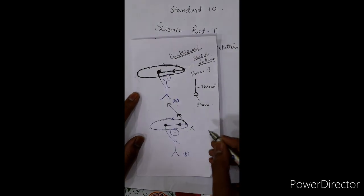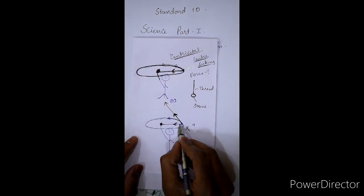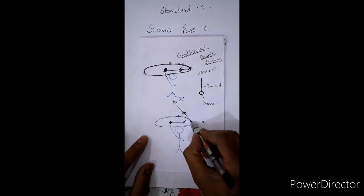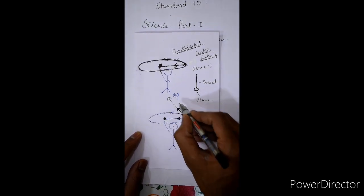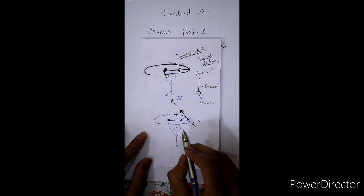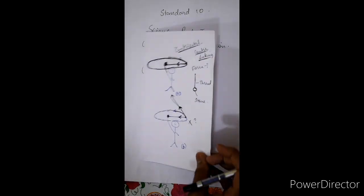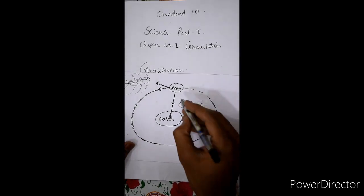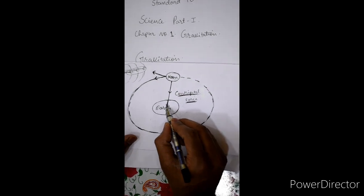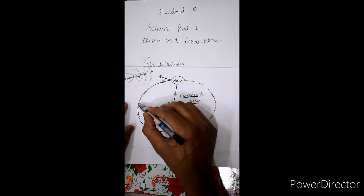If the centripetal force is not acting on the object, what will happen? If you lose this thread, the stone will fly off tangentially. Because when you release the other end of the thread, the stone is no longer experiencing the force, and as a result, the stone will fly off tangentially. In the same manner, here there is no thread, but the moon is experiencing the attractive force coming from the earth. So earth is exerting an attractive force on the moon, and because of this attractive force, the moon is making circular motion.